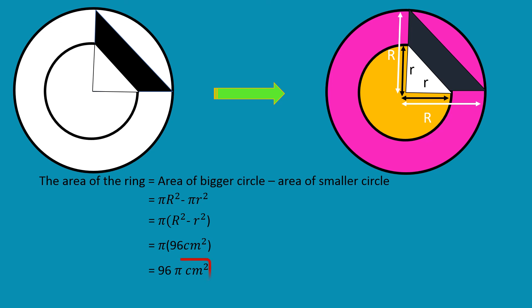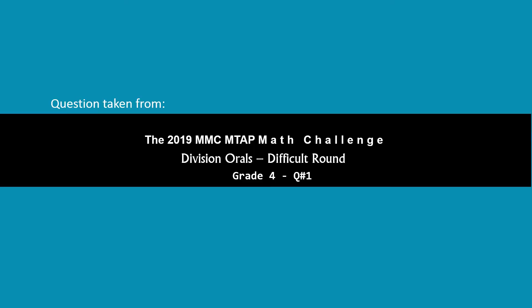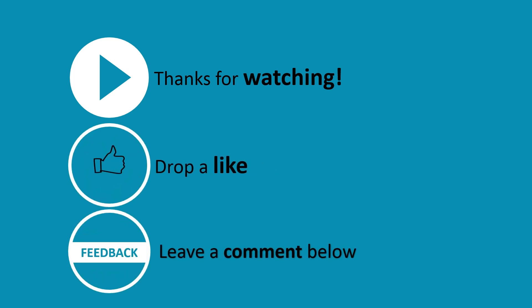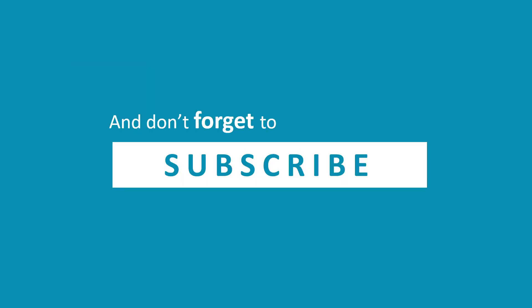That is our final answer, since we are only asked for the area of the ring in terms of pi. If you have a better idea on how to solve the problem, please share it and leave a comment below. Thanks for watching — drop a like, leave a comment, and don't forget to subscribe.